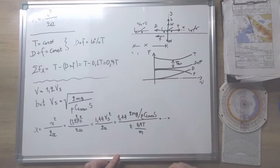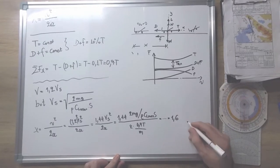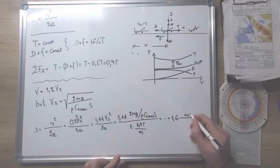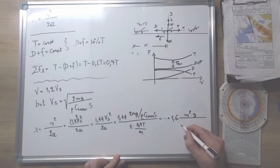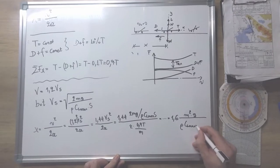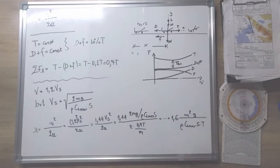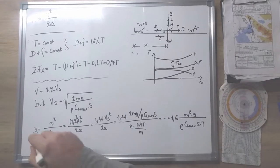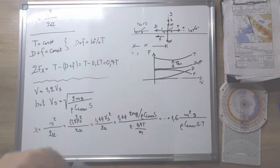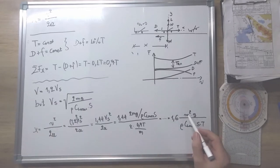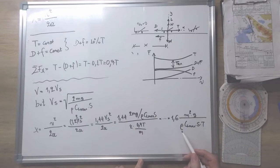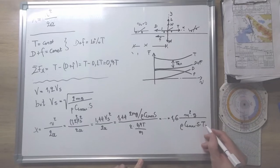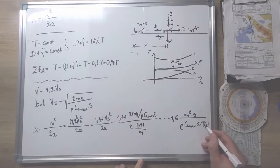So if we do the calculations, we can find that the runway length X required for the aircraft to take off is proportional to the squared mass of the aircraft, inversely proportional to air density, maximum coefficient of lift, and thrust — but thrust also depends on air density.